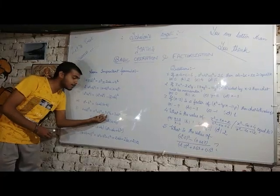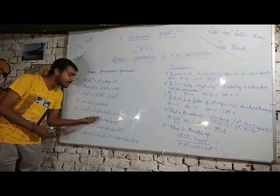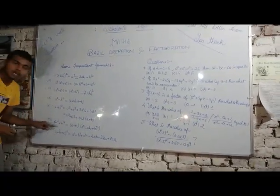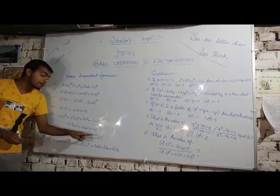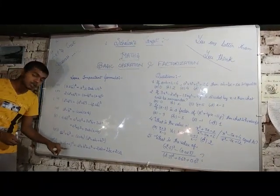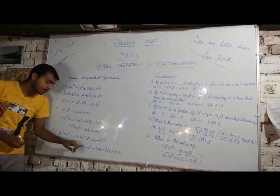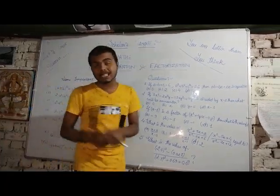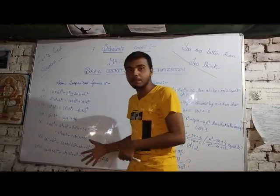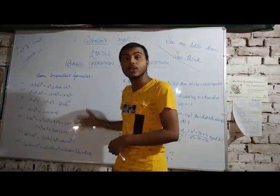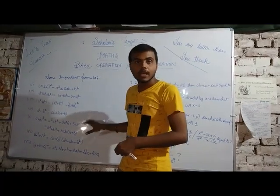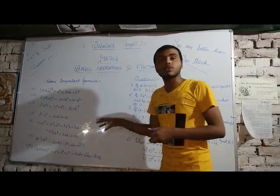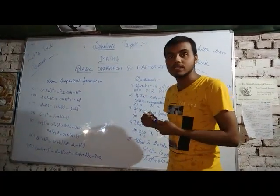If we can get 3ab common, then a³ + b³ is equal to (a + b)(a² - ab + b²). And (a + b + c)² is equal to a² + b² + c² + 2ab + 2bc + 2ca. My dear friends, please remember all these formulas — they are very important. Kindly pause the video and note them down.